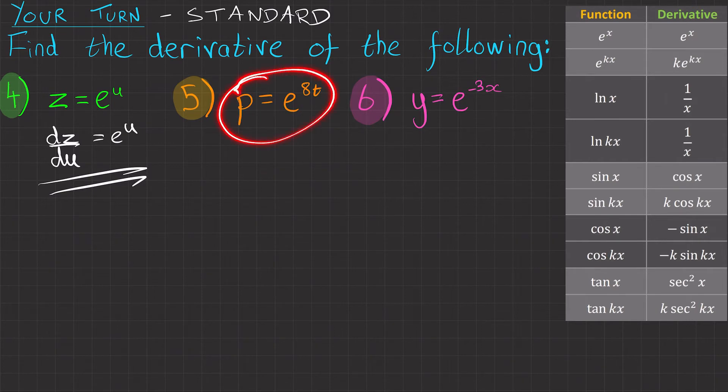Question five, p equals e to the 8t. Again, we're going to be looking at the e functions, but we'll focus on this second one here, e to the kx.